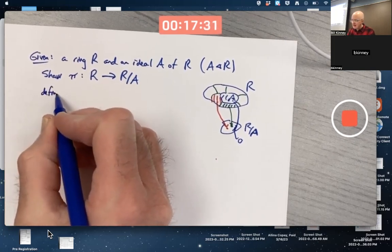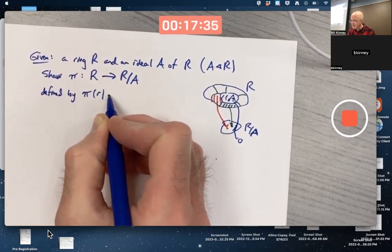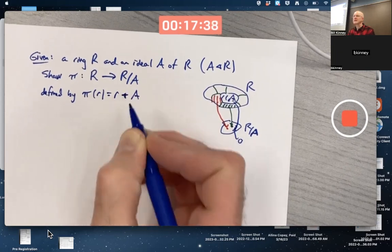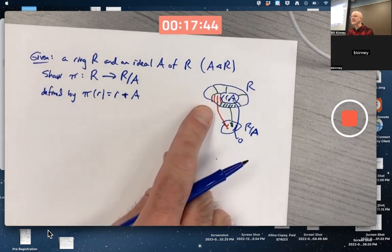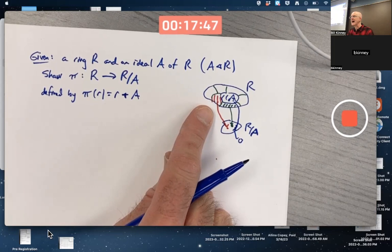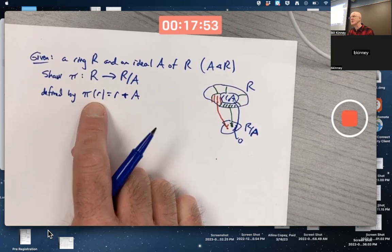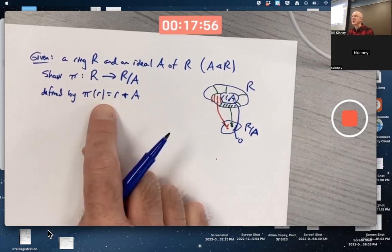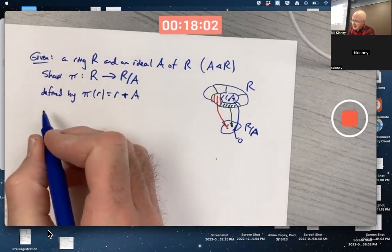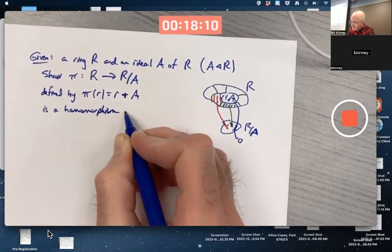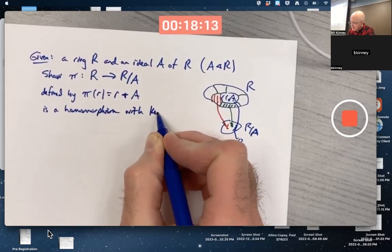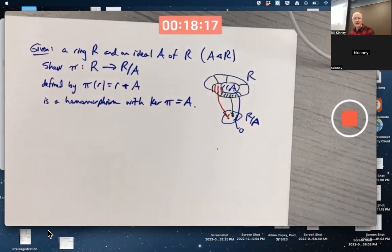This is defined by the formula pi of R equals R plus A. And by the way, in case it wasn't clear, there's no need to show that this is well-defined here, because you're talking about a ring that has individual elements that are not cosets, and you don't have to worry about representatives. We are talking about mapping individual elements of R to cosets, not the other way around. So there's nothing to do with showing this is well-defined here. This is definitely well-defined. Show that this is a homomorphism, a ring homomorphism with the kernel equal to A itself. That's the goal.